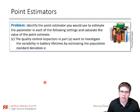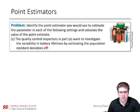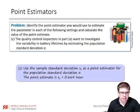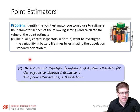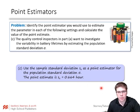What about one more? The quality control inspectors want to investigate the variability in battery lifetimes by estimating the population standard deviation. What would we use to estimate that? The sample standard deviation. It turns out that is a good estimator of the population standard deviation — it is an unbiased statistic. So in that sample of 50, we calculate the standard deviation: S_x is 0.664, and that would be our point estimate.